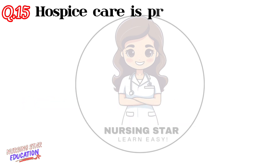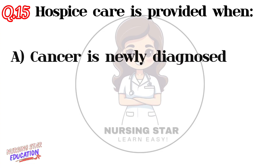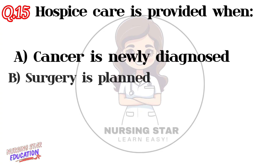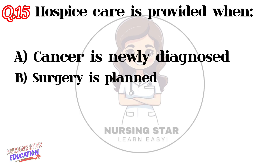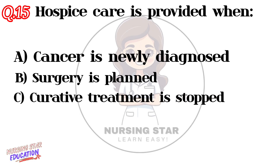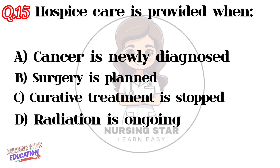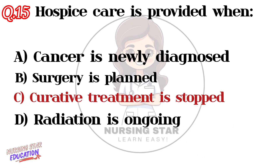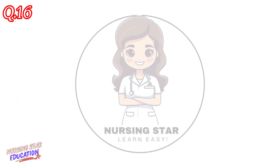Question number fifteen: Hospice care is provided when — Option A: Cancer is newly diagnosed. Option B: Surgery is planned. Option C: Curative treatment is stopped. Option D: Radiation is ongoing. Correct answer: C — Curative treatment is stopped.